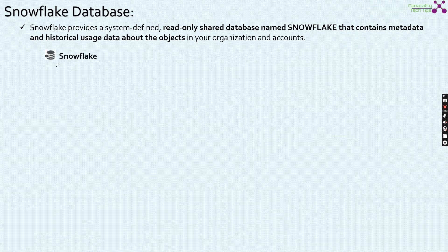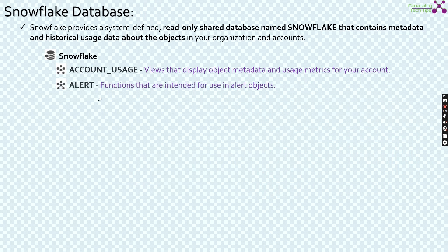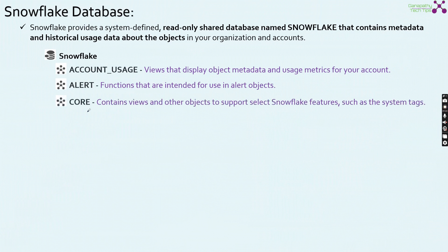When you look into the Snowflake console, it has a Snowflake Database. Within the Snowflake Database, there are a set of schemas available. The first one is the account usage schema, which contains the views that display the object metadata and usage metrics of your account. The second one is the alert schema, which has the functions intended for use in alert objects. Third is the core schema, which contains views and other objects to support select Snowflake features such as system tags.